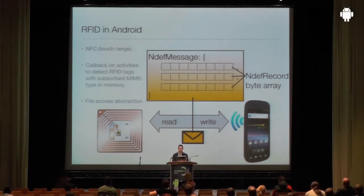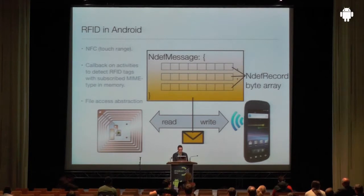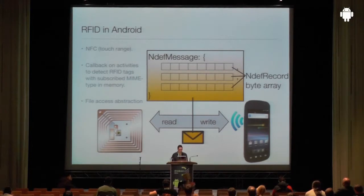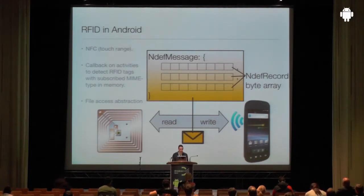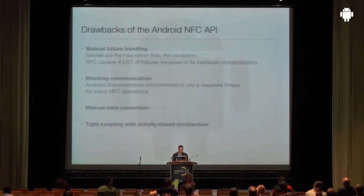Activities are notified of the appearance of a tag by subscribing to a certain MIME type or external type, and they are notified using the intent callback system. The Android NFC API provides file access abstractions to store NDEF messages on tags, with methods like open, close, read, and write. However, there are a few drawbacks with this API.